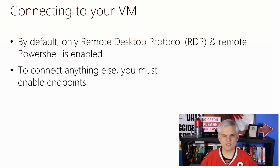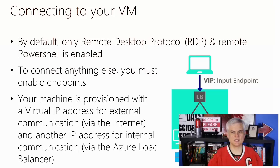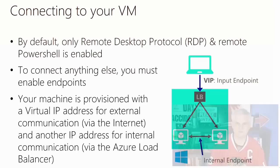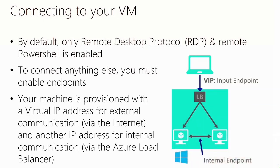Once your machine is provisioned, it will be provisioned with two IP addresses: one for internet-facing communication and one for private communication inside of Azure only. We're going to spend an entire module explaining the various IP addresses and how they work, and talk about the Azure Load Balancer and the internal load balancer and the roles they play.